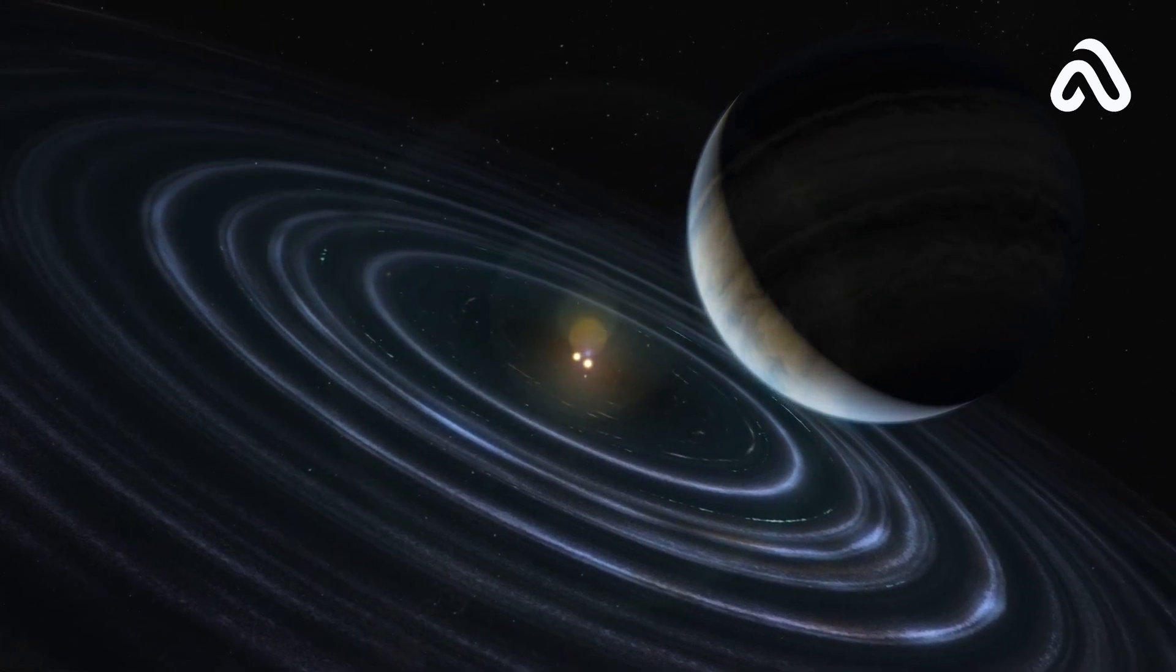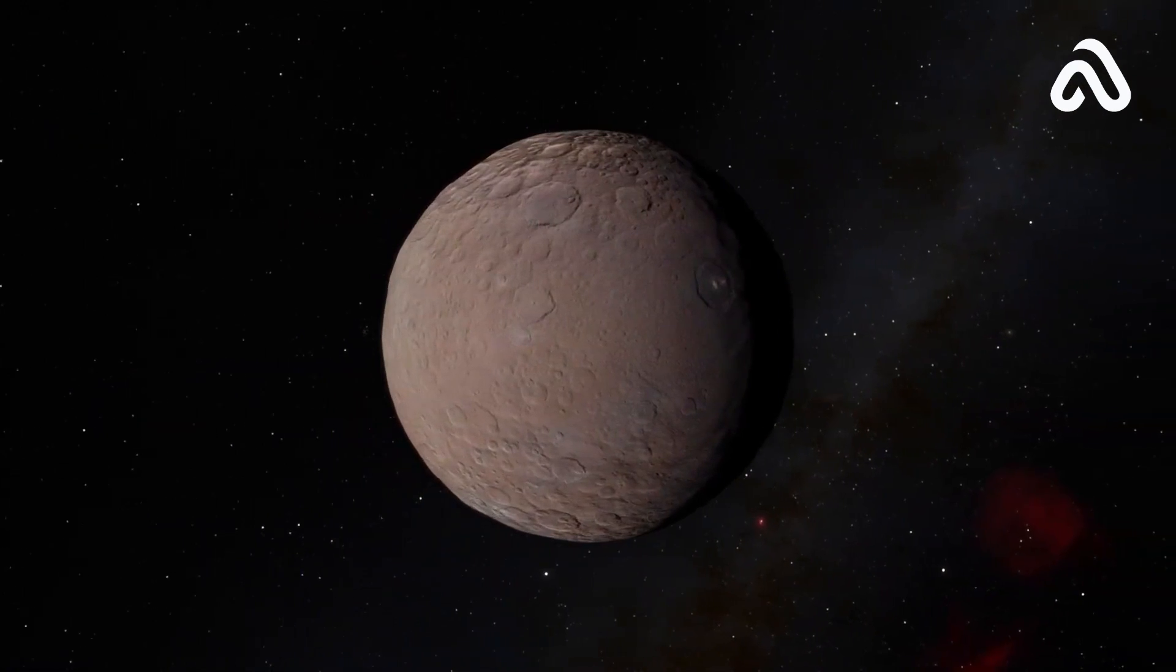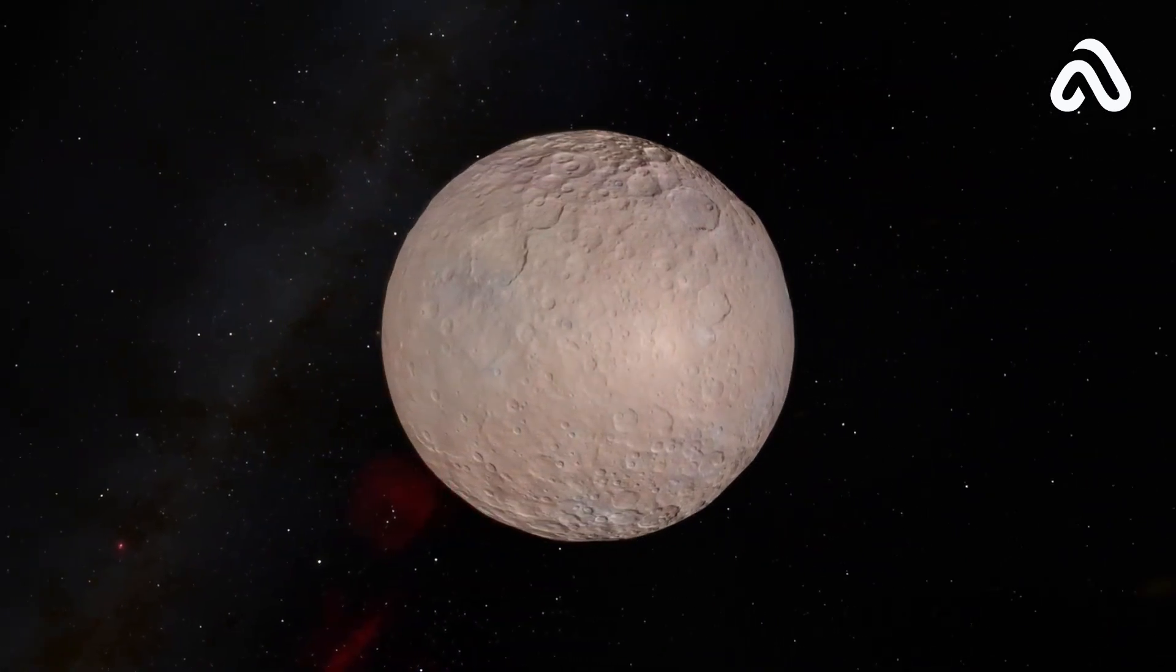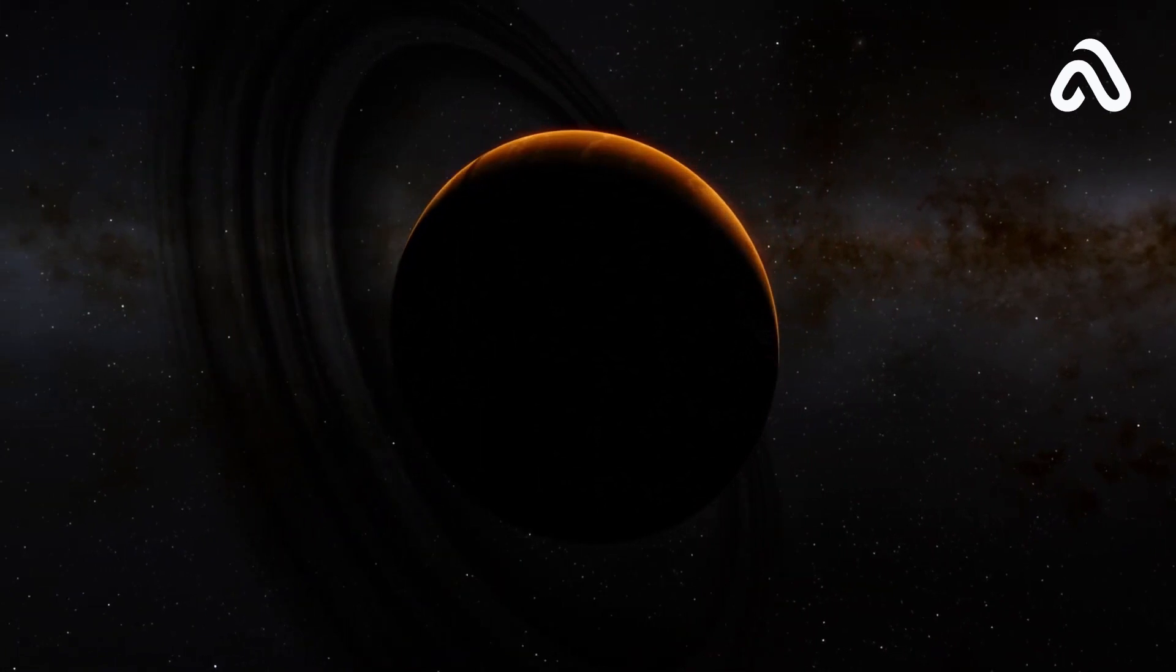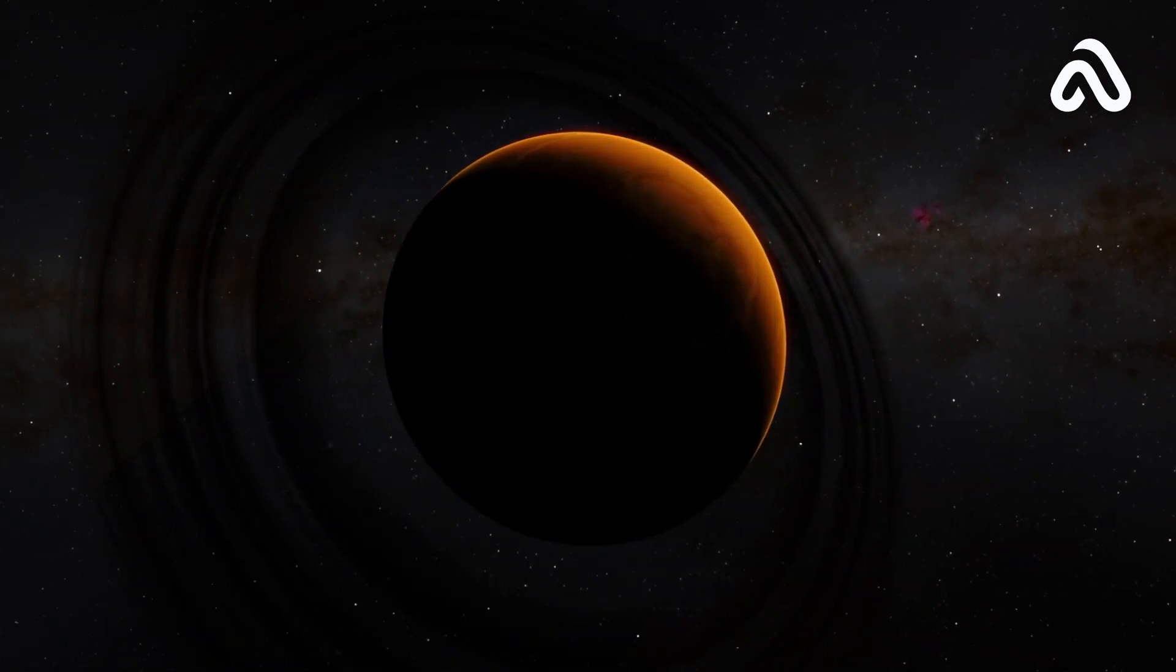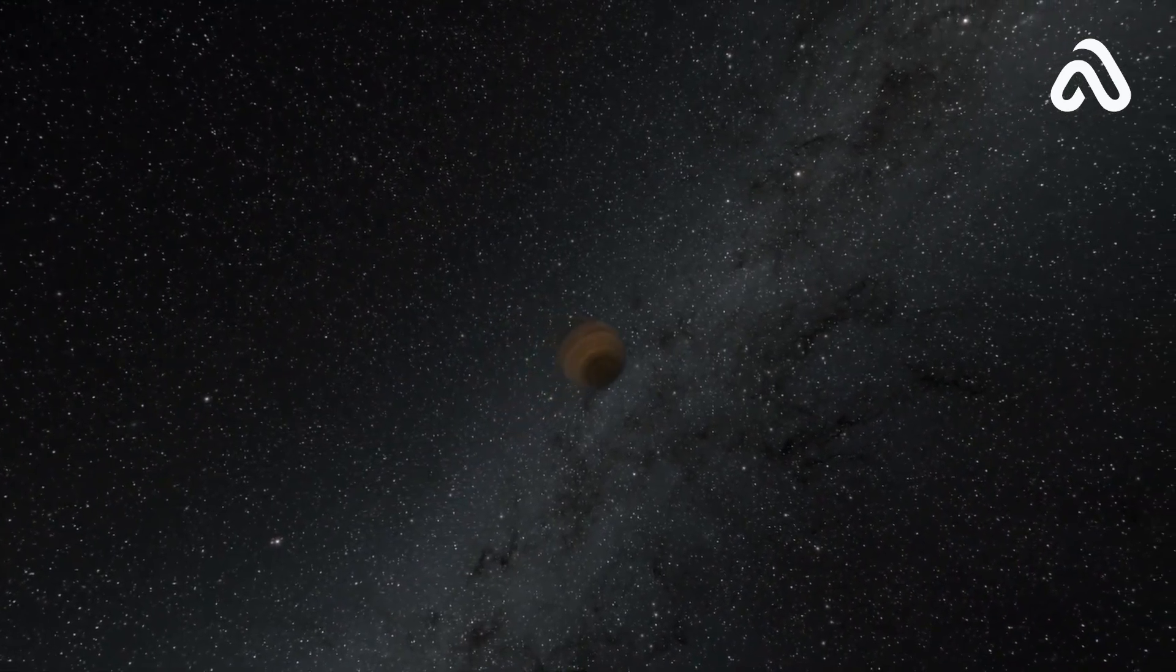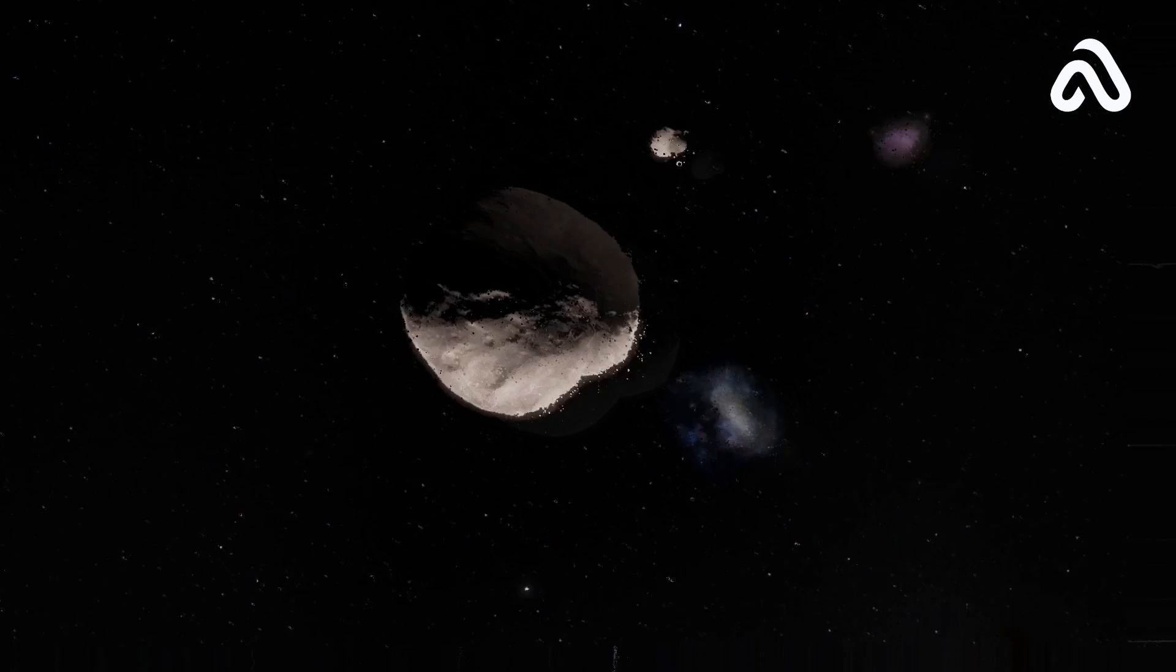But how would life adapt to such an unconventional world? At first glance, a rogue planet might appear as a desolate wasteland, a barren and inhospitable realm unsuitable for life. However, recent research suggests that some of these wandering worlds may harbor the necessary conditions to support thriving ecosystems. Furthermore, it is conceivable that similar processes could unfold on rogue planets, where volcanic activities or other events supply the energy and raw materials necessary for life to take root.